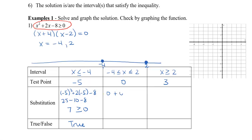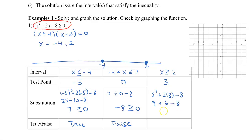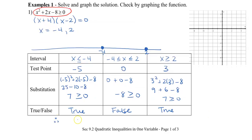Let's plug in 0: 0 plus 0 minus 8 is negative 8. Is that greater than 0? No, that's false. And finally, put in 3: 3 squared plus 2 times 3 minus 8 is 9 plus 6 minus 8, which gives me 7. Is that greater than 0? Yes, that is true. So based on my test points, it's true when x is less than or equal to negative 4 and also when x is greater or equal to 2. So my two solutions are x less than or equal to negative 4 and x greater or equal to 2.